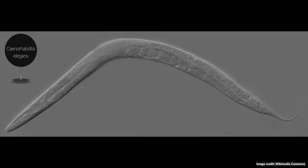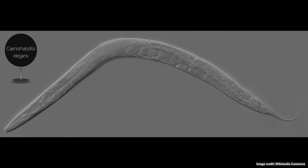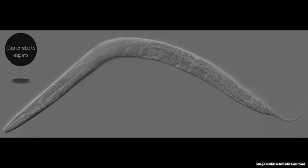One roundworm called Caenorhabditis elegans lives in the soil and has found much use as a model organism. It has had its entire genome sequenced, the developmental fate of every cell determined, and every neuron mapped. This species was part of an ongoing research project conducted on the 2003 Space Shuttle Columbia mission and survived even the re-entry breakup.